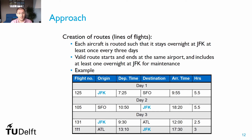Valid routes start and end at the same airport — forming a cycle — and include at least one stay at JFK for maintenance. An example route starts at JFK on day one, flies to San Francisco; day two, the aircraft returns from San Francisco to JFK; day three, it flies back and forth to Atlanta, ending again at JFK. This route creates two overnights at JFK, giving two maintenance opportunities.